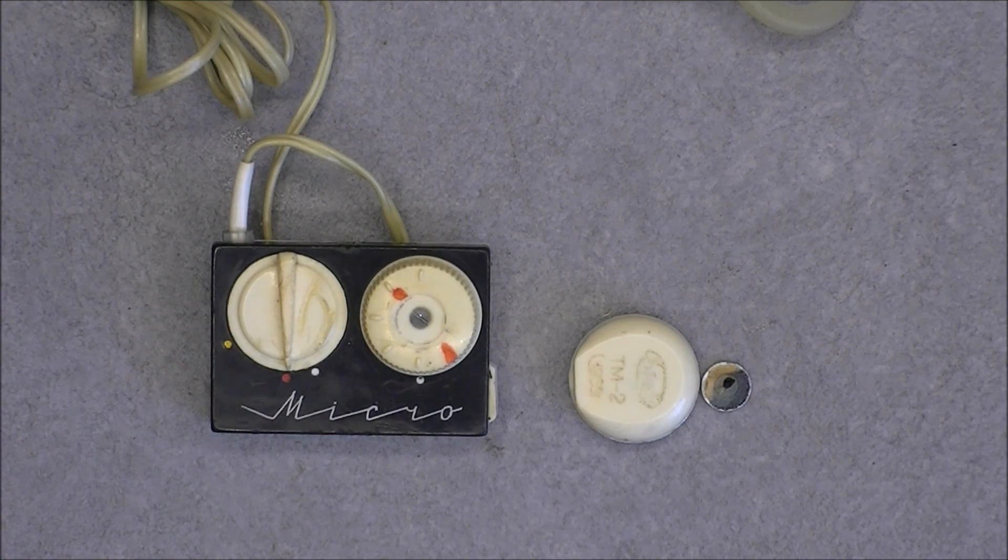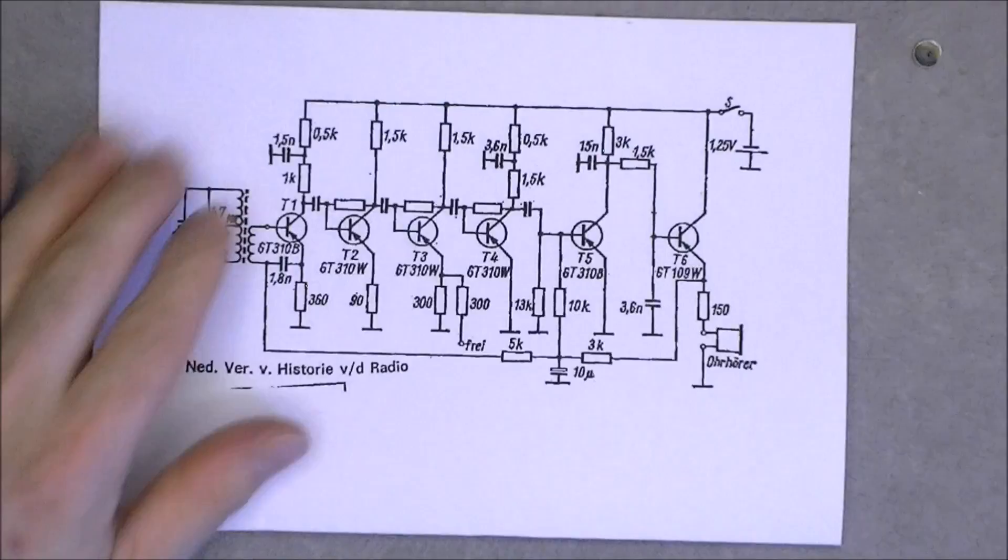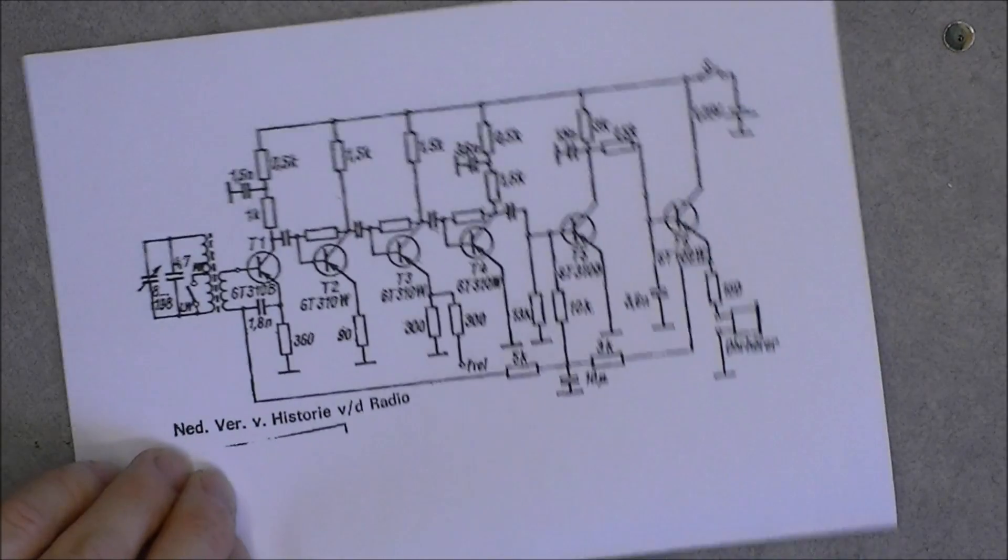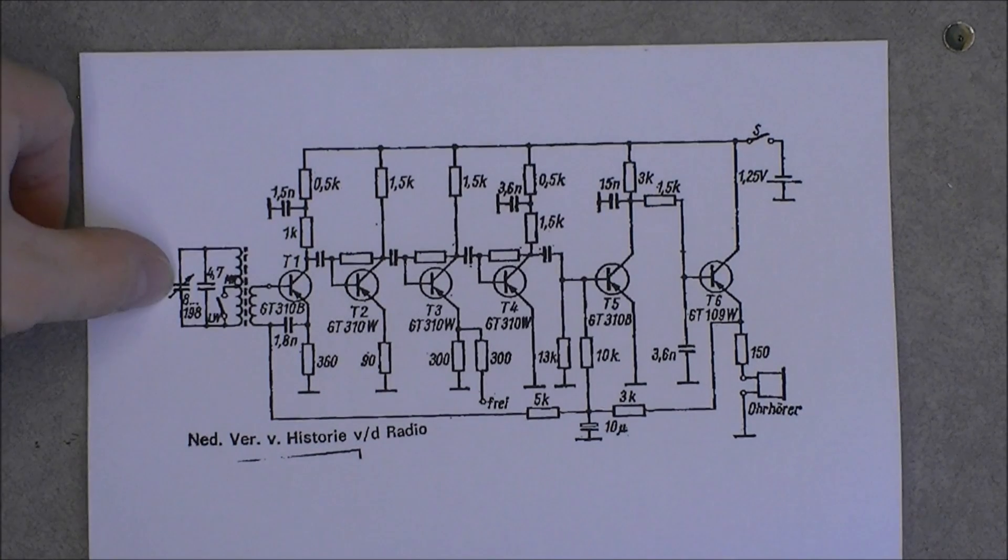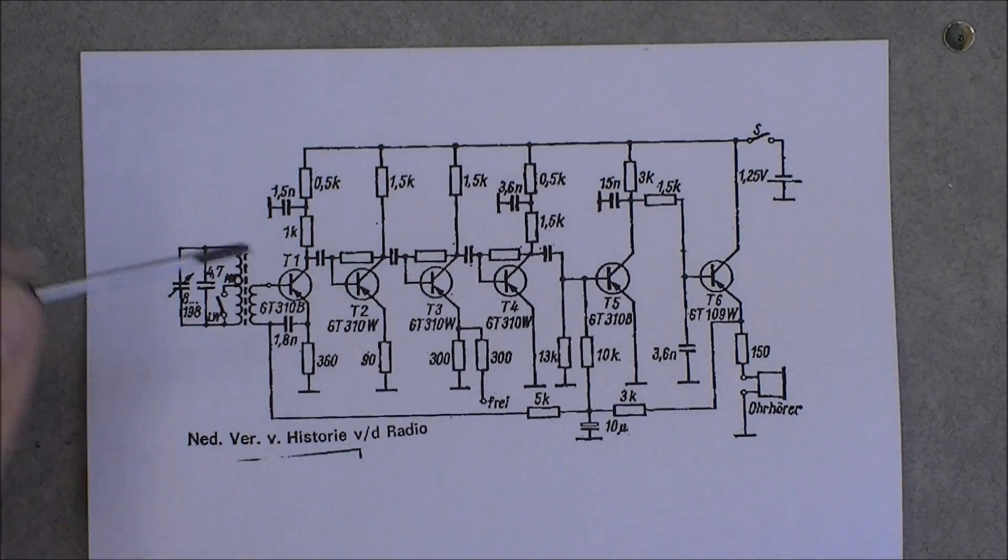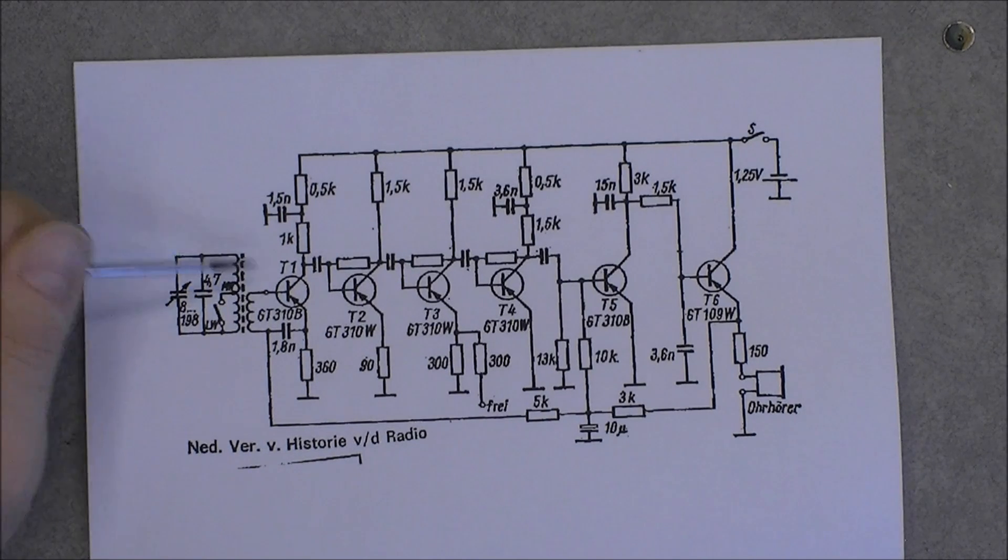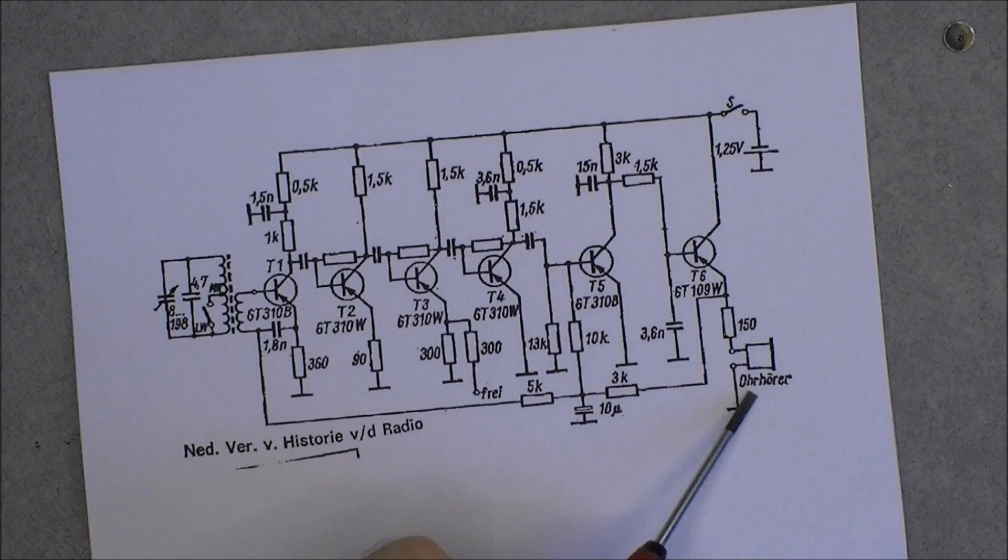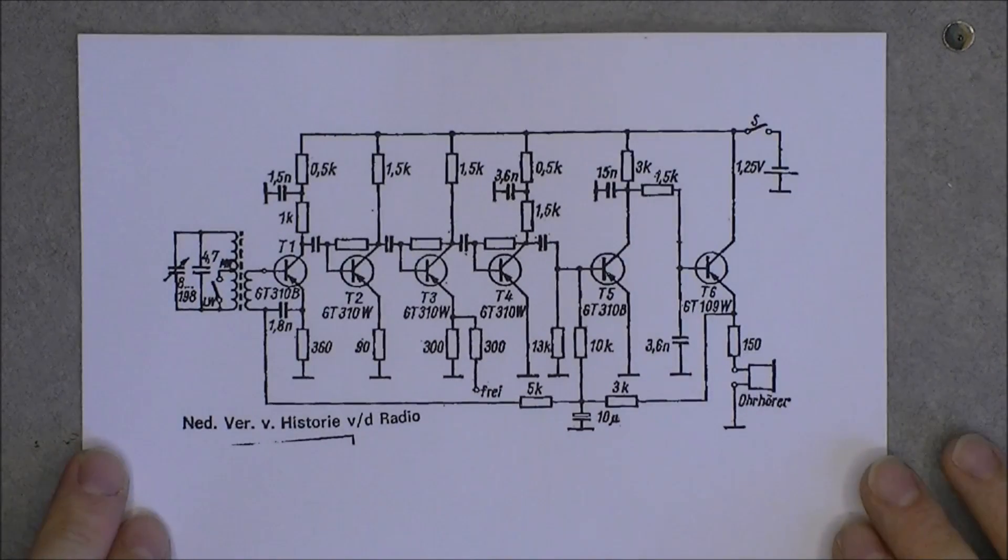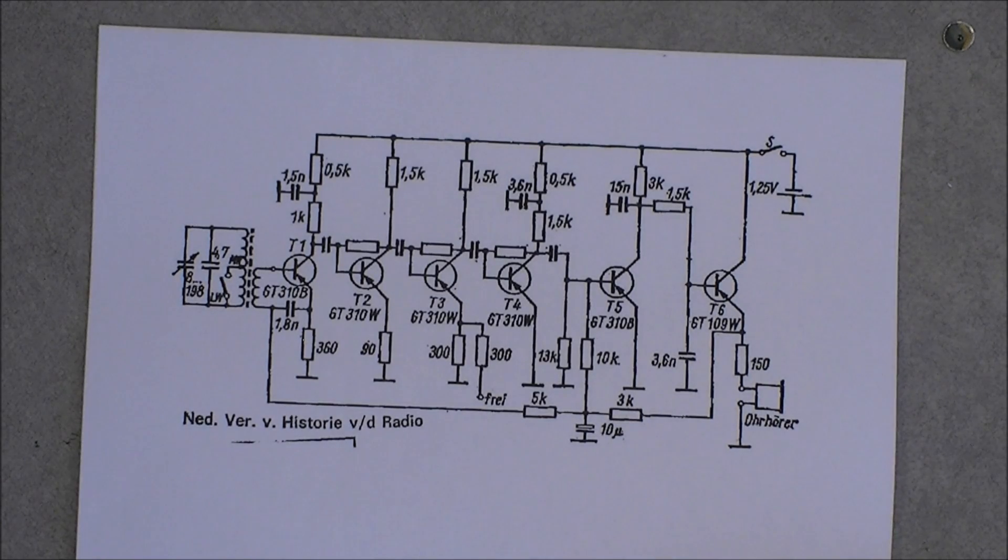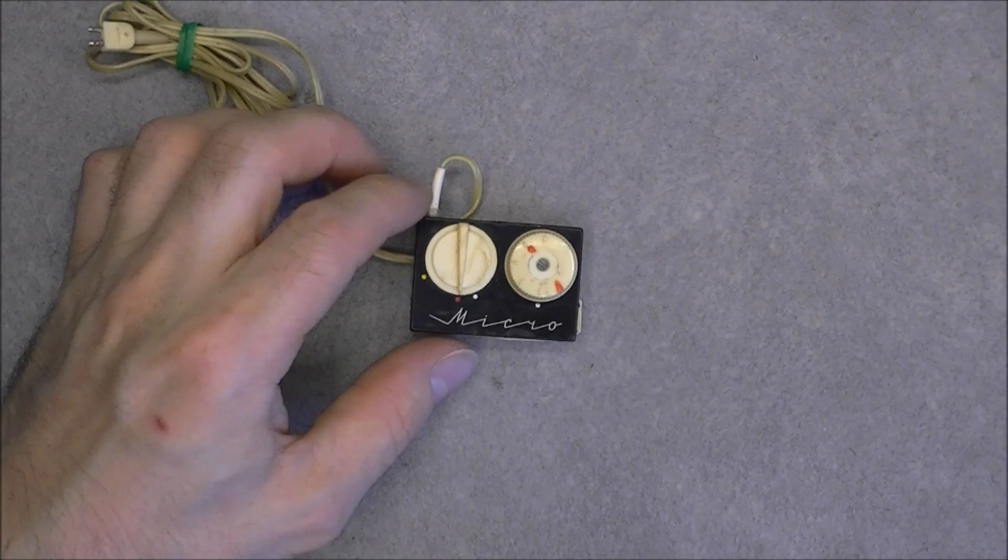I was lucky enough to find the schematic for the device. So as you can see, six transistors, variable capacitor here, this is the antenna we will see inside probably. Your transistors, your headset here, your coin cell here. And it is all. So all this in this tiny box, how is it possible?